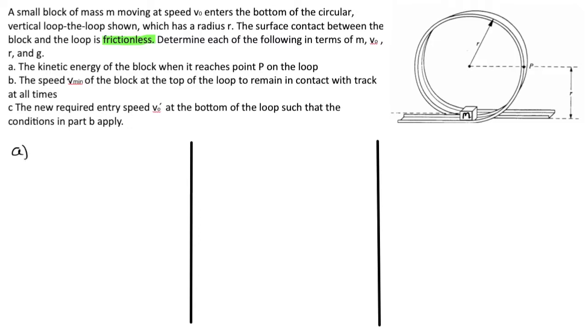In part a, we find the kinetic energy of the block when it reaches point p on the loop. This being a frictionless situation, I can assume that energy is conserved, which means my initial mechanical energy must equal my final mechanical energy. Here, I have a ground level, an initial location, and a final location given by point p. What kind of energy is present in the initial case? Well, let's say we're on the ground, where there's no height. It's not potential energy.